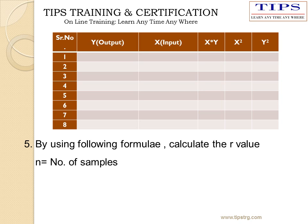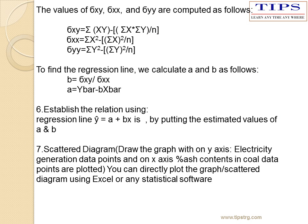By using the formula, calculate the R value. The values of sigma xy, sigma xx, and sigma yy are computed using the respective formulas. To find the regression line, calculate the values of A and B: B is given by its formula, and A is calculated using the formula y-bar minus B times x-bar. By substituting these values, we get the equation y equals A plus Bx. Plot the graph using a scatter diagram — you can also plot using an Excel sheet.